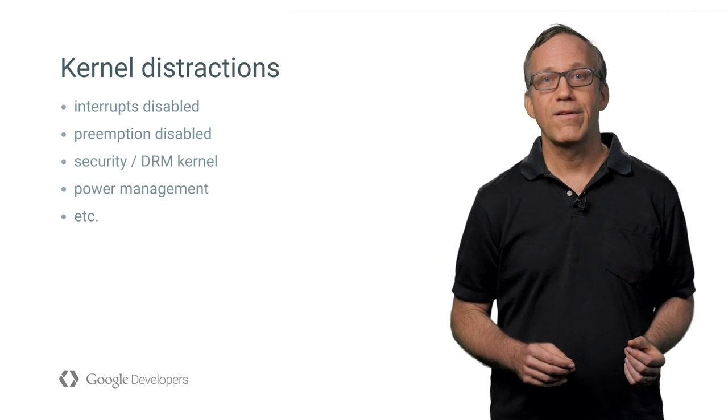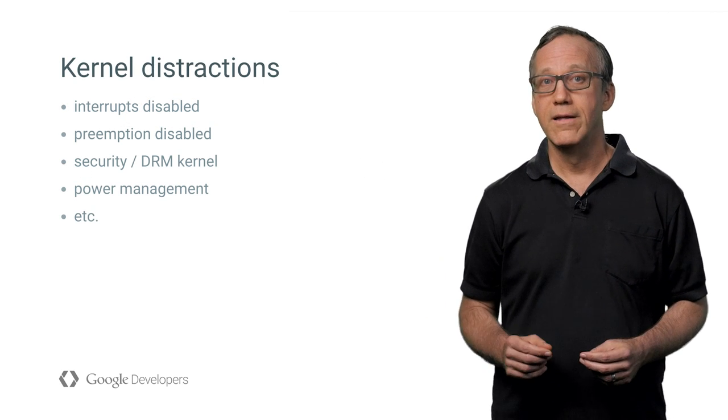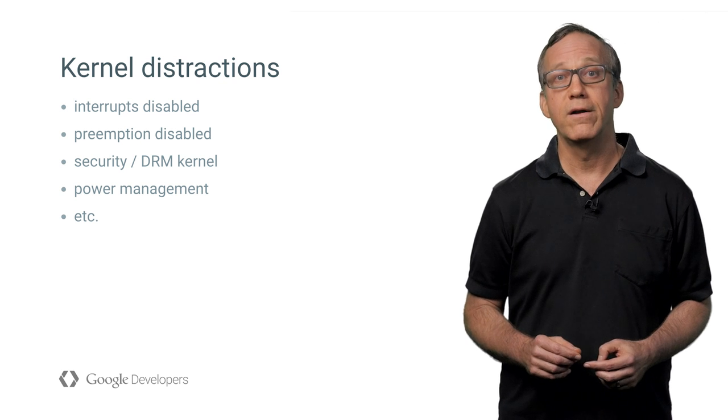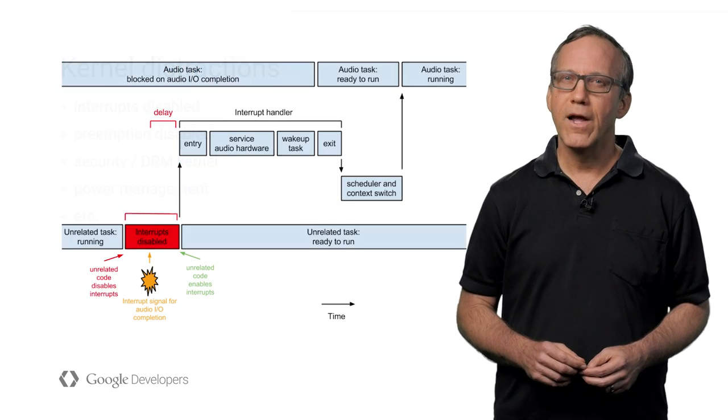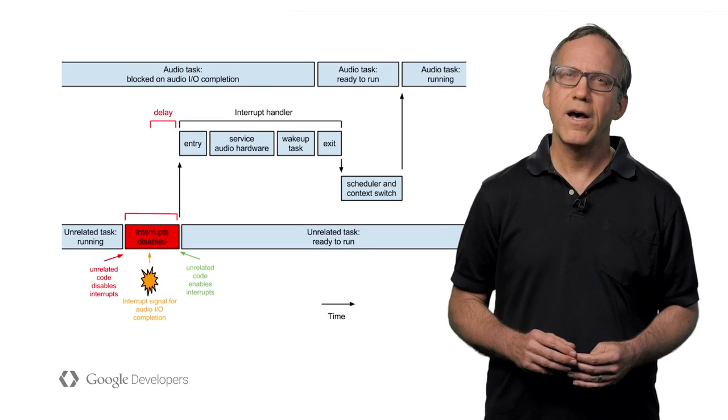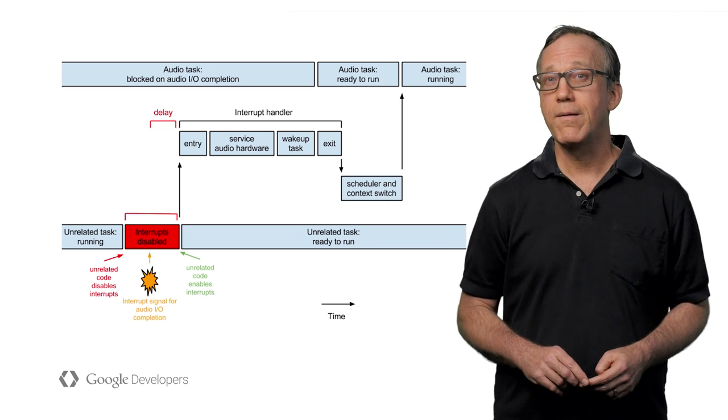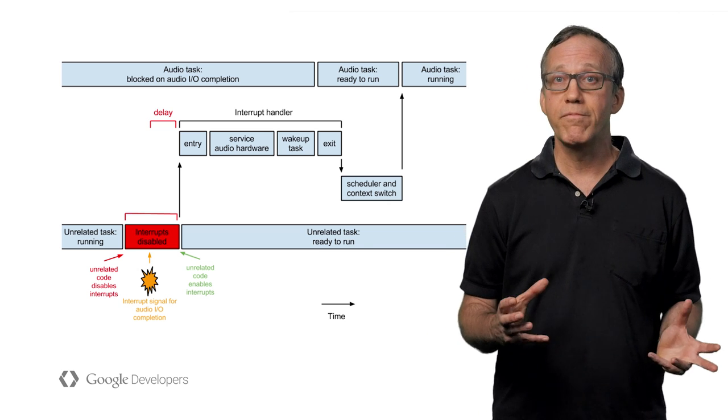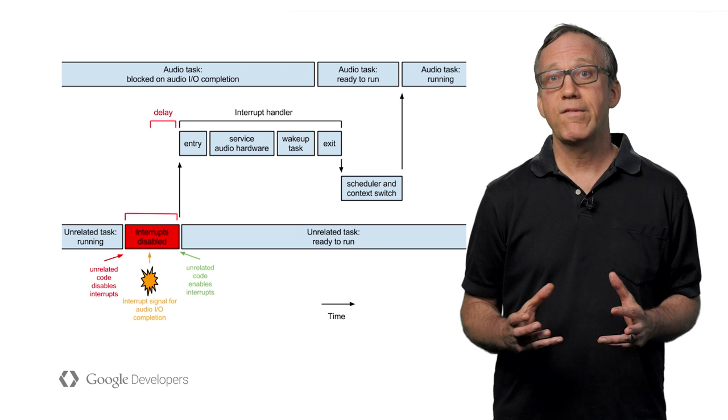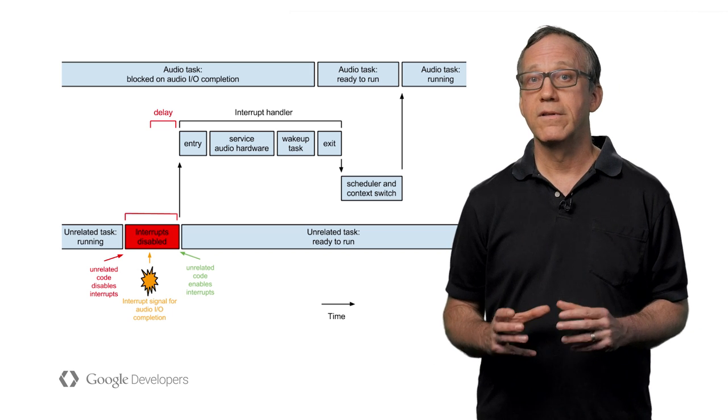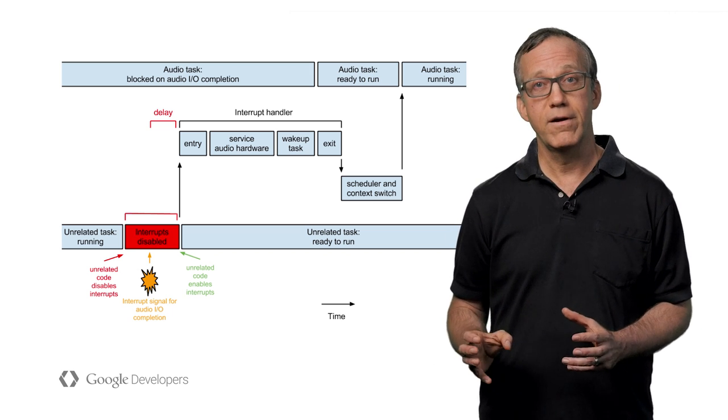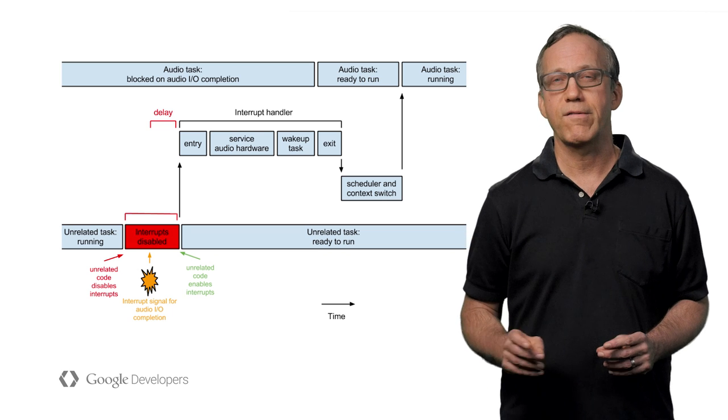Well, there are many things that can distract the kernel with a K from running our audio tasks on time. For example, a random kernel module, perhaps an unrelated device driver, disables interrupts or disables preemption for too long. Either way, this kind of excessive disabling will delay the kernel context switch code from switching to the right audio task on time.